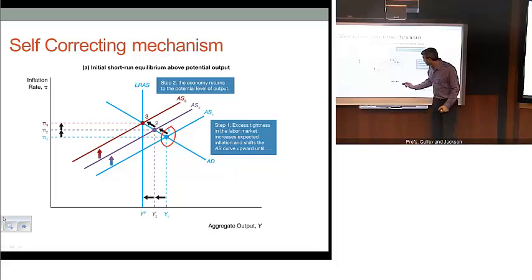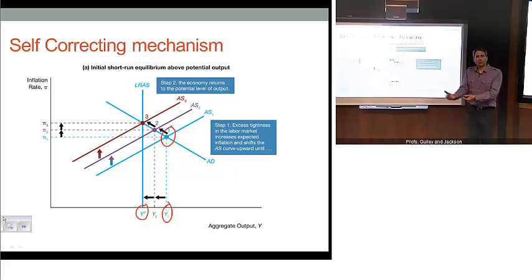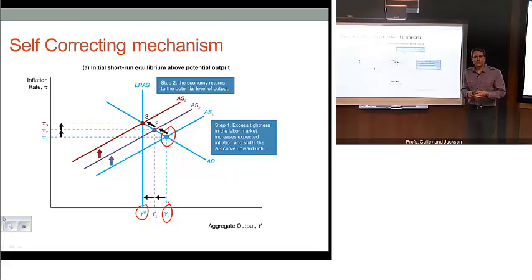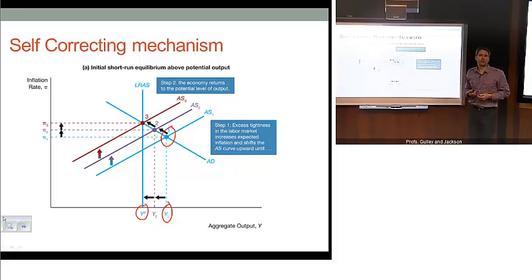The story is pretty simple. At our equilibrium point one in the short run, output is at Y1, and that's above our potential level of output. If we're producing beyond the potential level of output, that's not sustainable in the long run. We're going to be paying our workers overtime, draining our labor resources, running our machines at full capacity, which wears them out and adds to costs. Eventually those higher costs are going to bleed through to higher inflation.